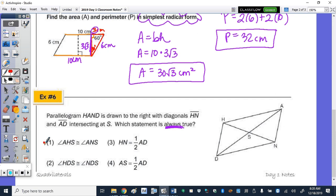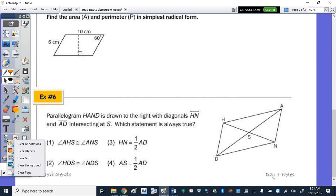So AHS, let's locate that angle. That's this angle. Is that congruent to ANS? No. AHS would be congruent to this angle because of two parallel lines cut by a transversal, and those are alternate interior. So that's not it. So I'm just going to erase the whole slide, make it easier. We're having some issues. There we go. Alright, number two.